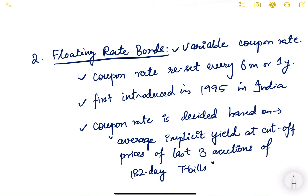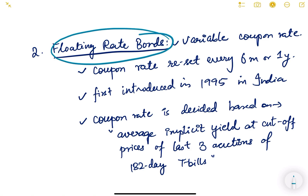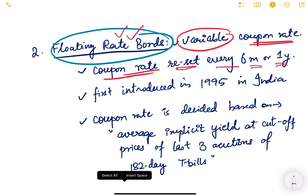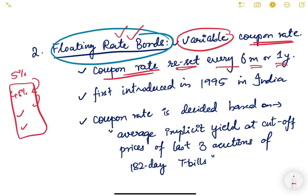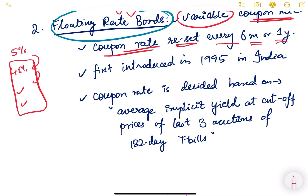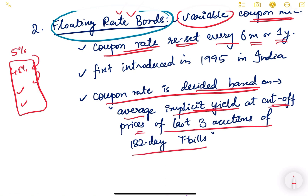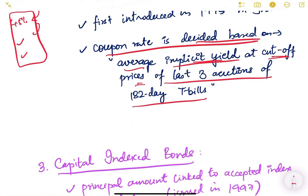The next type is floating rate bonds. In floating rate bonds, the coupon rate is variable and is reset every six months or one year. The coupon rate is decided based on the average implicit yield at cutoff prices of the last three auctions of 182-day T-bills. Let me explain what this means.